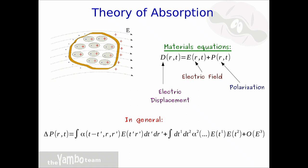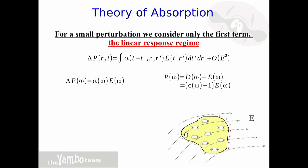Starting from the beginning: if we do spectroscopy in general, we think that we apply a perturbation, an electric field, to a material, and then the material reacts creating an internal polarization. The sum of the electric field and the polarization is what is called the electric displacement. In general, one can write an equation relating the change in polarization to the applied electric field via some coefficient. This relation is non-linear, so there is a linear term, but also second-order terms and higher. If the external perturbation is weak enough, the higher-order terms are negligible and one can focus on the linear response. This equation for linear response can be Fourier-transformed from the time to the frequency domain, so the convolution becomes just a multiplication.